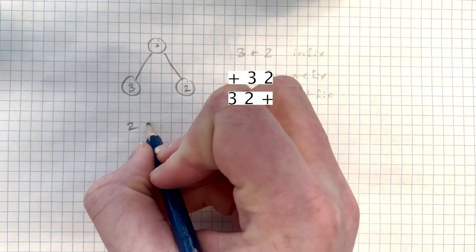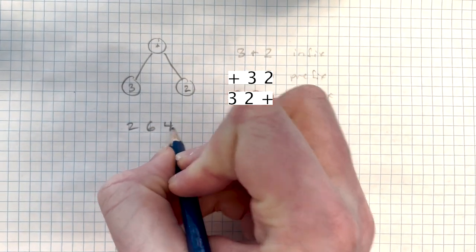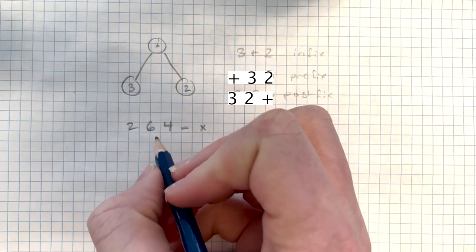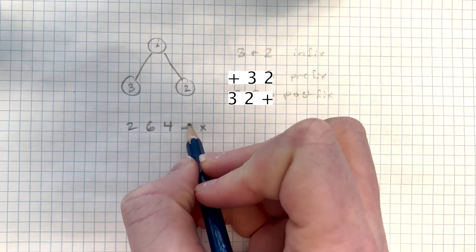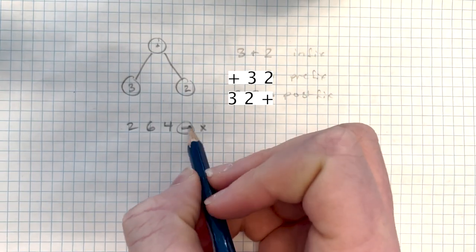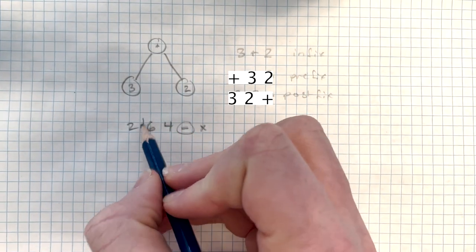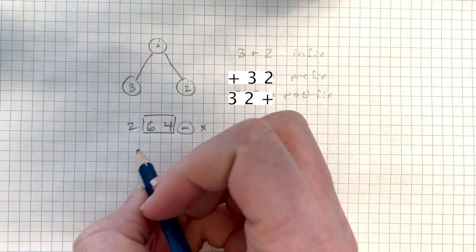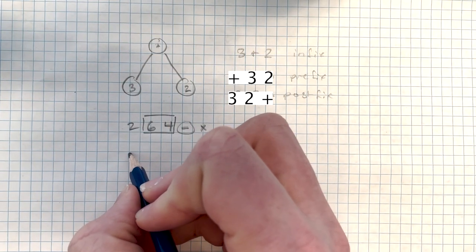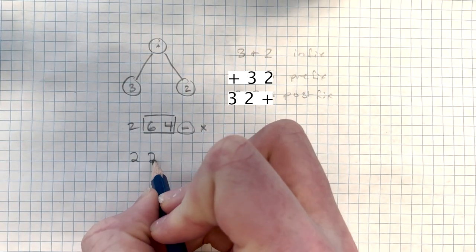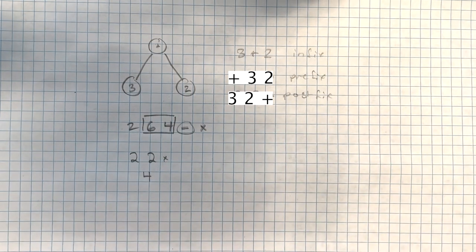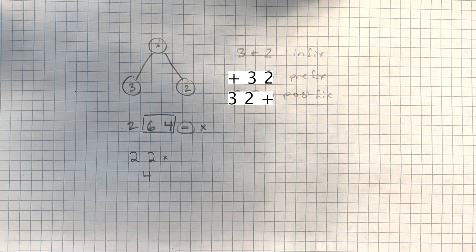minus, times, then this is going to become, you're going to take your leftmost operator and apply it to these two operands, and you're going to get, that's going to simplify to 2, 2, times, which is going to be 4. No brackets are needed because of the way that this is read.